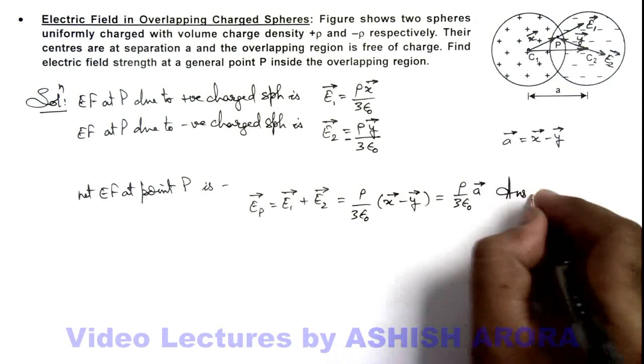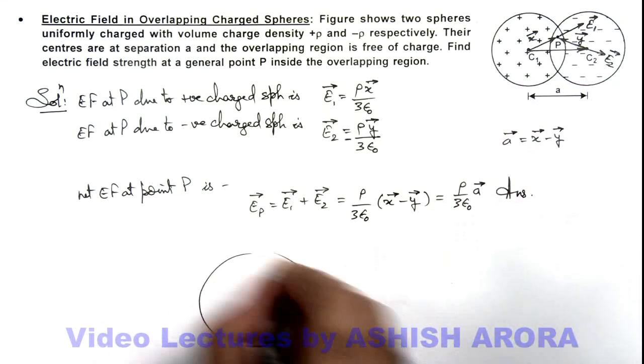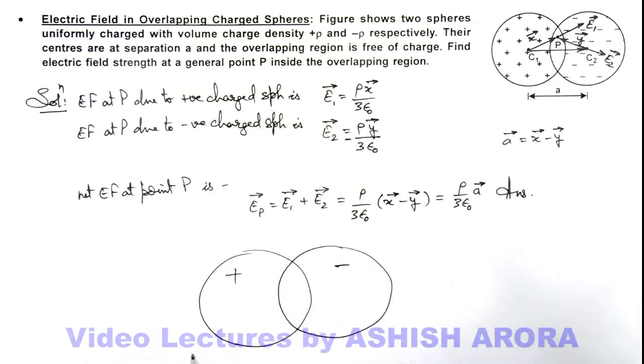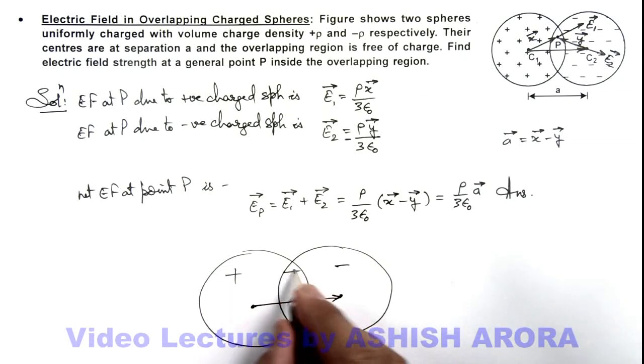That will be the answer to this problem. And here we can see if the two spheres are overlapping, this is positive and this is negative, and if the centers are displaced by a position vector a, then we can see in the cavity region the electric field everywhere is uniform and its magnitude is given by ρa vector by 3ε₀.